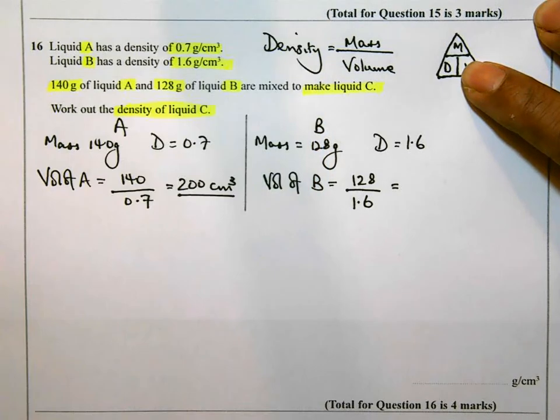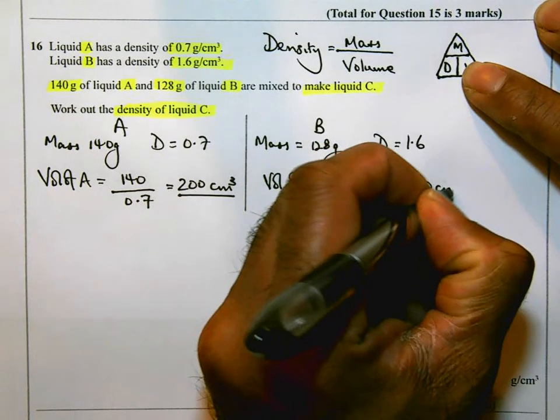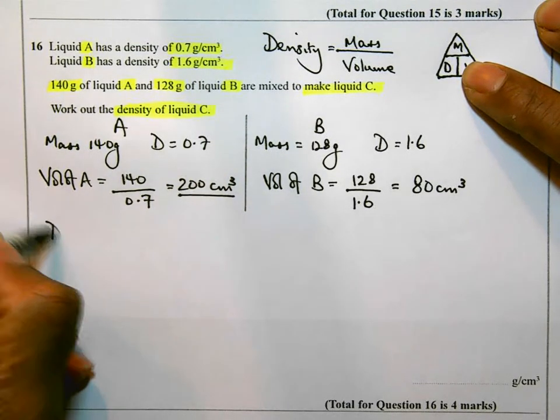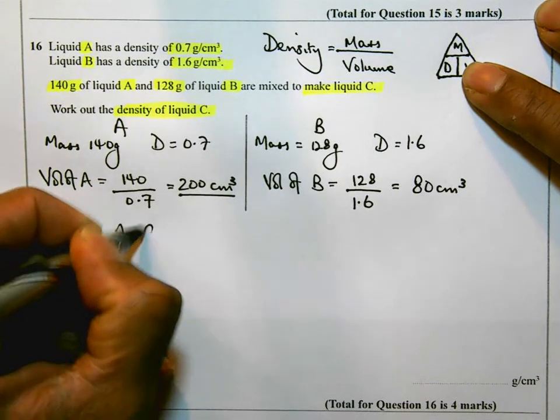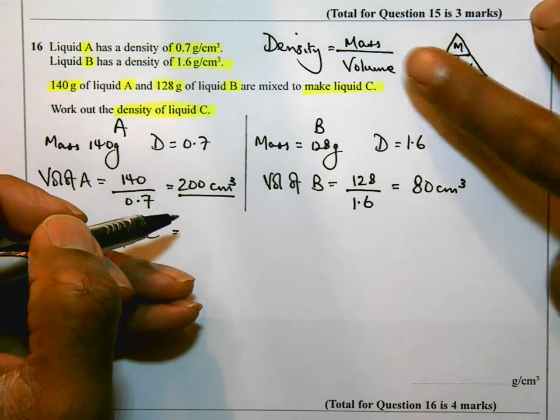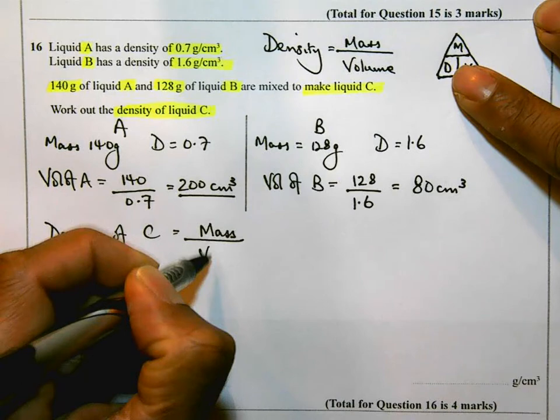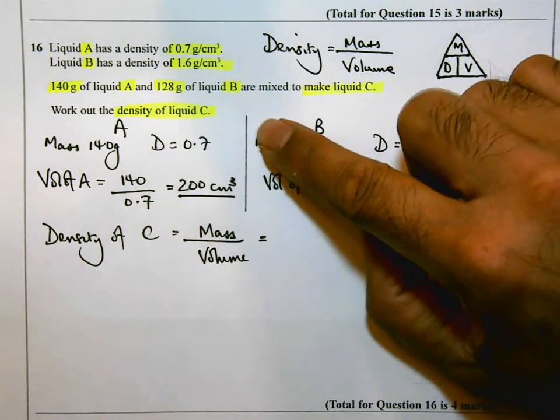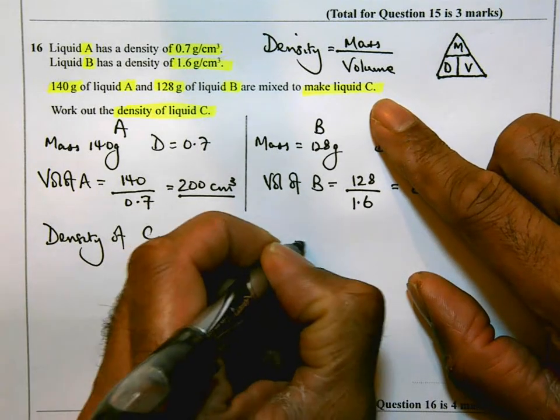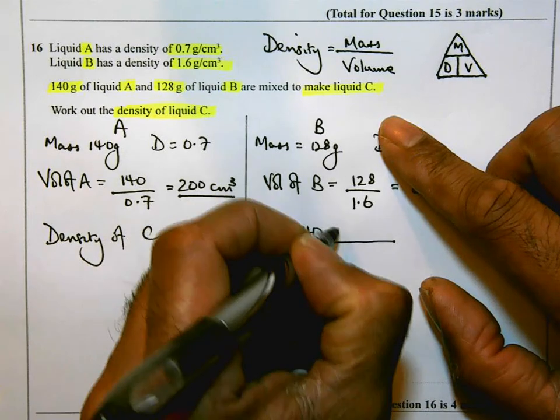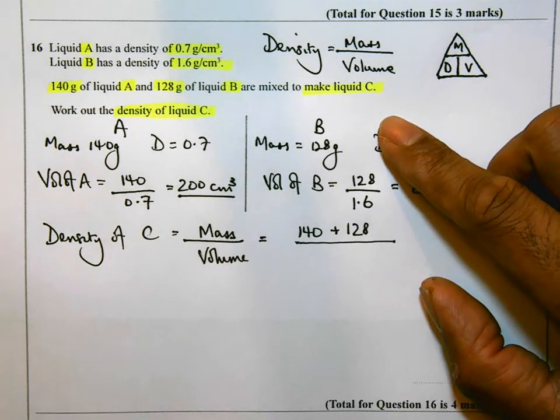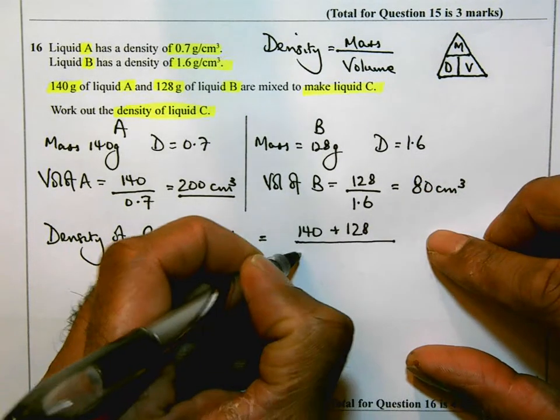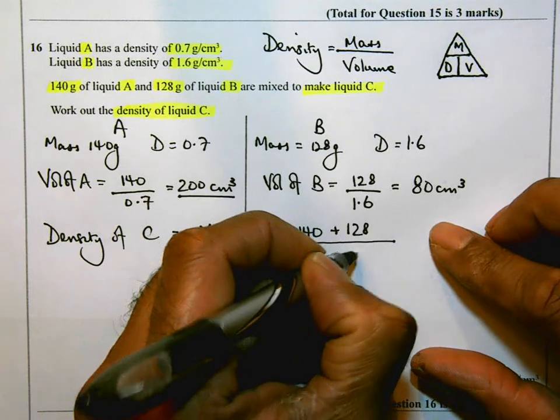So remember the question says work out the density of C. So the density of C is going to be mass over volume. Now from the question, we were told that A and B are mixed together to make C. So the mass that are mixed together, 140 grams of A and 128 grams of B are mixed together. So its total mass is going to be 140 plus 128. Its total volume is going to be 200 centimeter cubed of A and 80 centimeter cubed of B, adding these together.